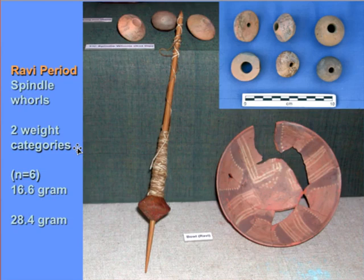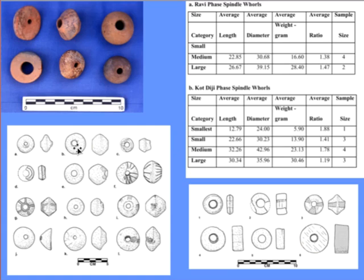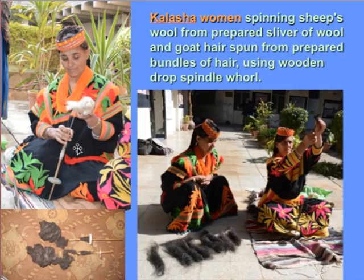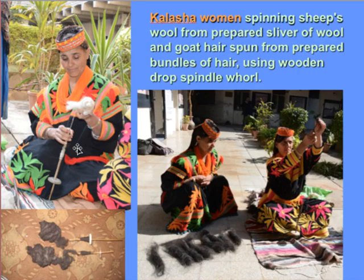Spindle whorls from the Ravi phase show different sizes and weights, suggesting they were used to spin different fineness of thread — some fine, some coarse — in cotton, wool, jute, or other fibers. Recording weights and sizes of spindle whorls is encouraged so data can be compared across regions. Women from the Kalasha region of northern Pakistan spin goat's hair and wool with wooden spindles, and can make very elaborate and fine threads using this technique. Many of the spindles the Harappans used might not have been preserved, as we find terracotta spindle whorls but wooden spindles would leave no trace.